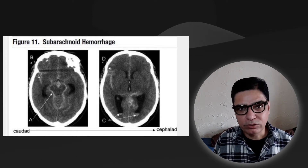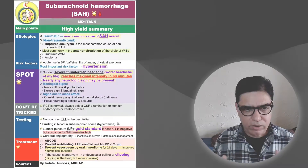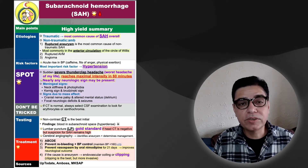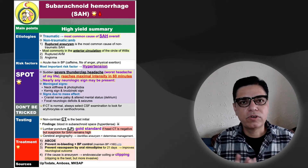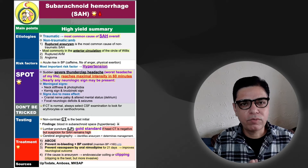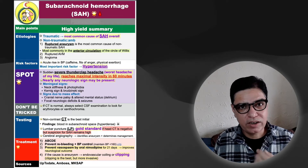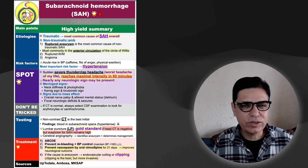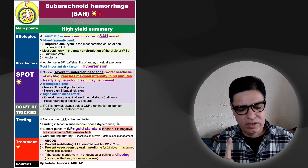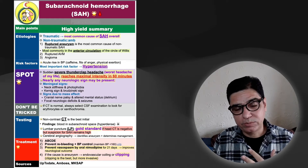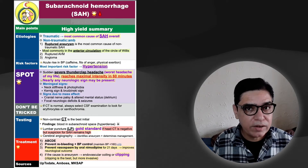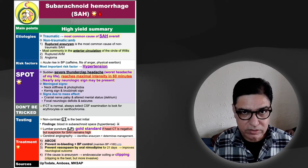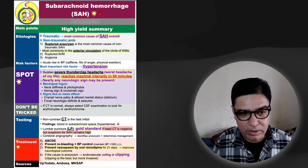In certain cases where the diagnosis is still unclear, some neurologists may proceed with cerebral angiography, in which a dye is injected to see if it is leaking somewhere. This is seldom used and only at specialized centers. So the three diagnostic steps to remember are: CT scan first, then lumbar puncture if CT is negative and suspicion is high, and cerebral angiography as a third option if still in doubt.